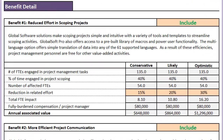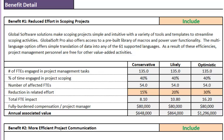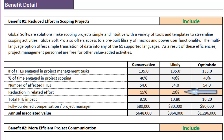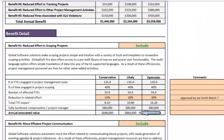Let's look at benefit 1. This benefit relates to reduced effort in scoping projects thanks to our imaginary software, and calculates the value of returning that time to project managers. We determined on the data tab that we have 135 full-time equivalents engaged in project management work overall. They spend 40% of their time engaged in scoping projects, so there are 54 full-time equivalents who do project scoping exclusively. The orange section relates to the improvement levels we expect in each scenario. We are assuming we can improve productivity by 20% in the likely scenario, which means we are creating 10.8 full-time employees with time to do additional work. We assign a financial value by multiplying the FTE impact by the burden compensation — giving us $864,000 worth of value created in the likely scenario for benefit number 1.